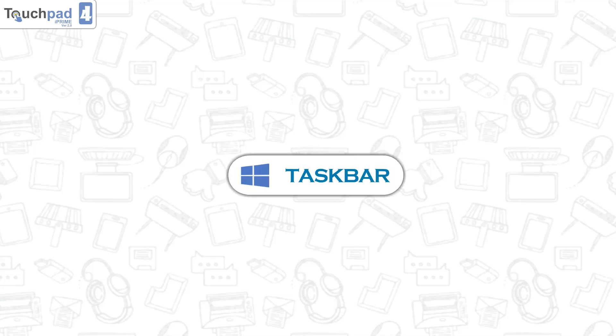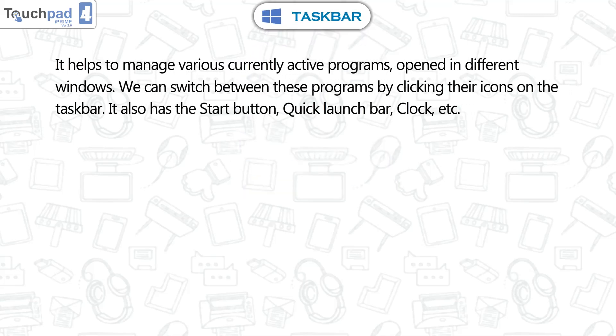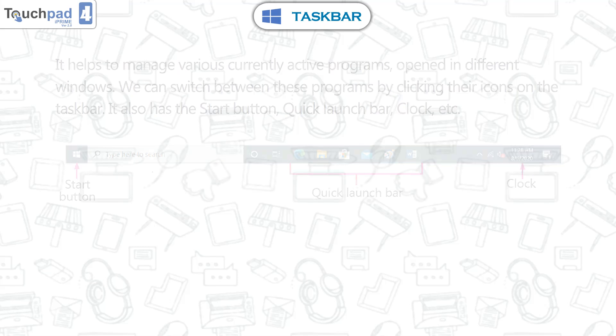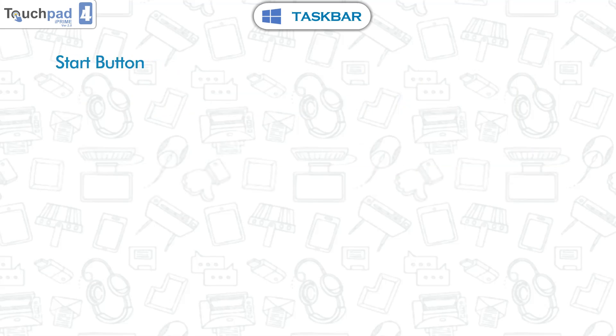Taskbar. It helps to manage various currently active programs opened in different windows. We can switch between these programs by clicking their icons on the taskbar. It also has the start button, quick launch bar, clock, etc.